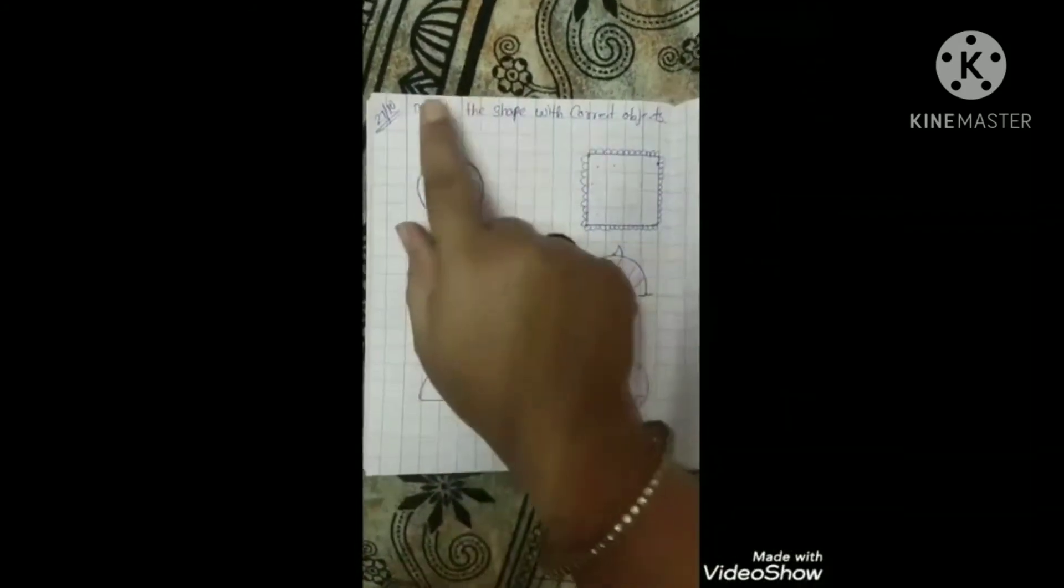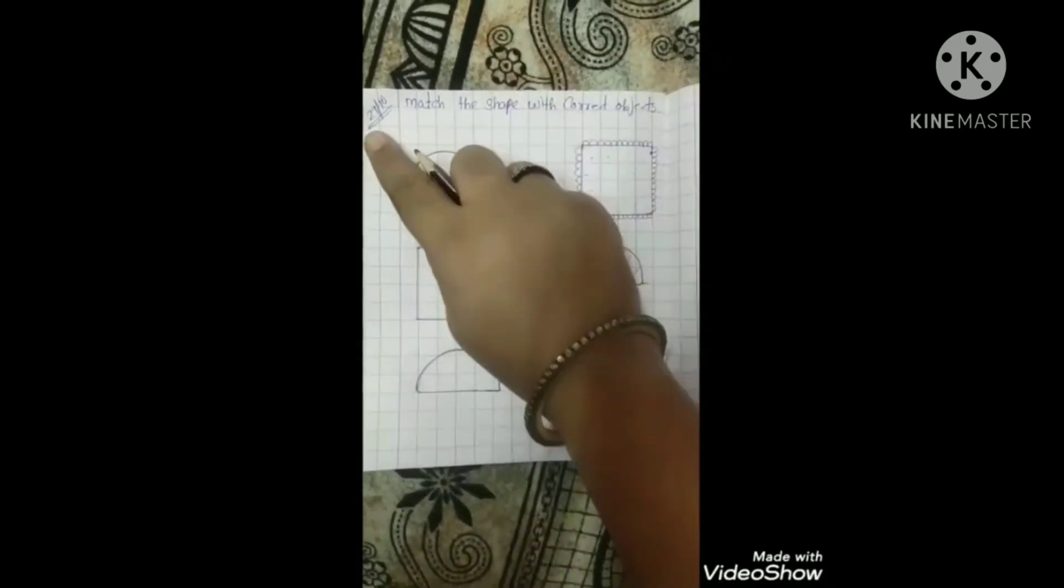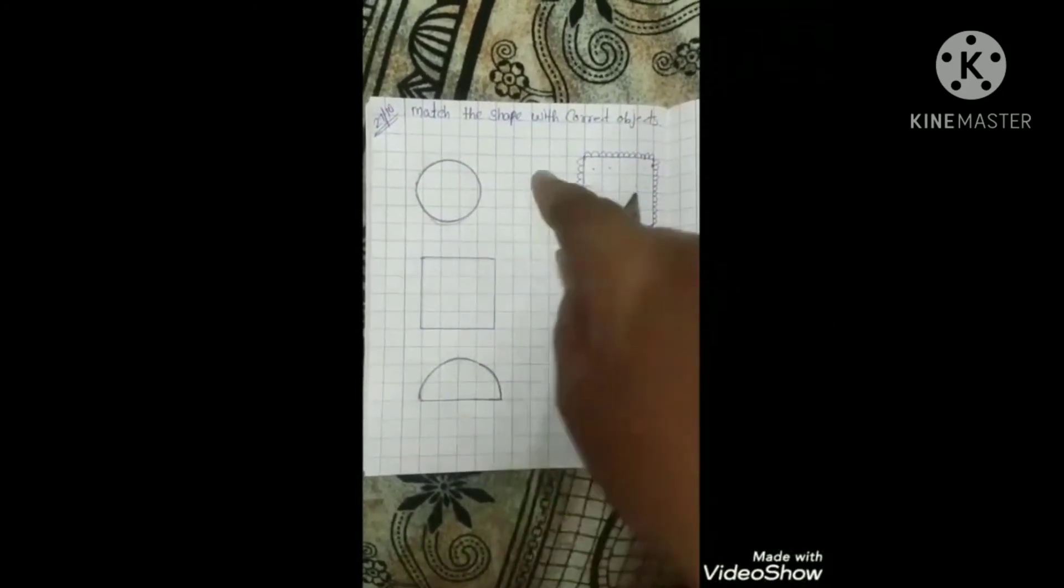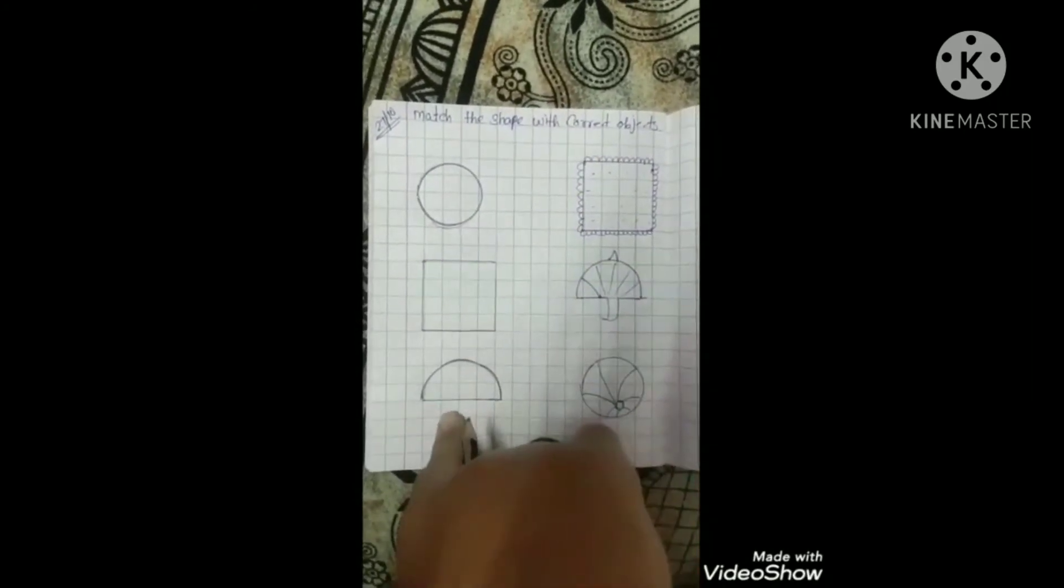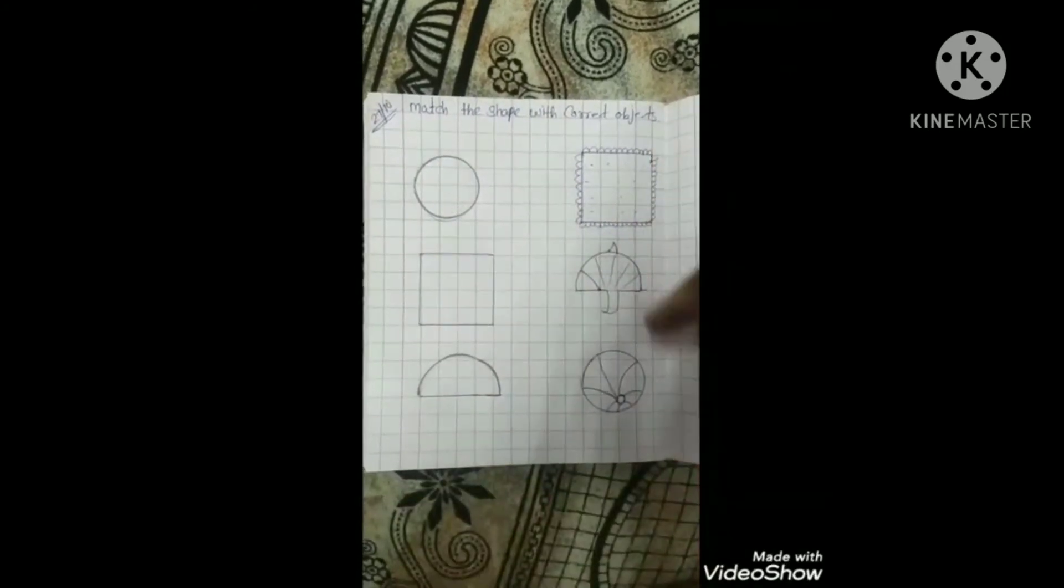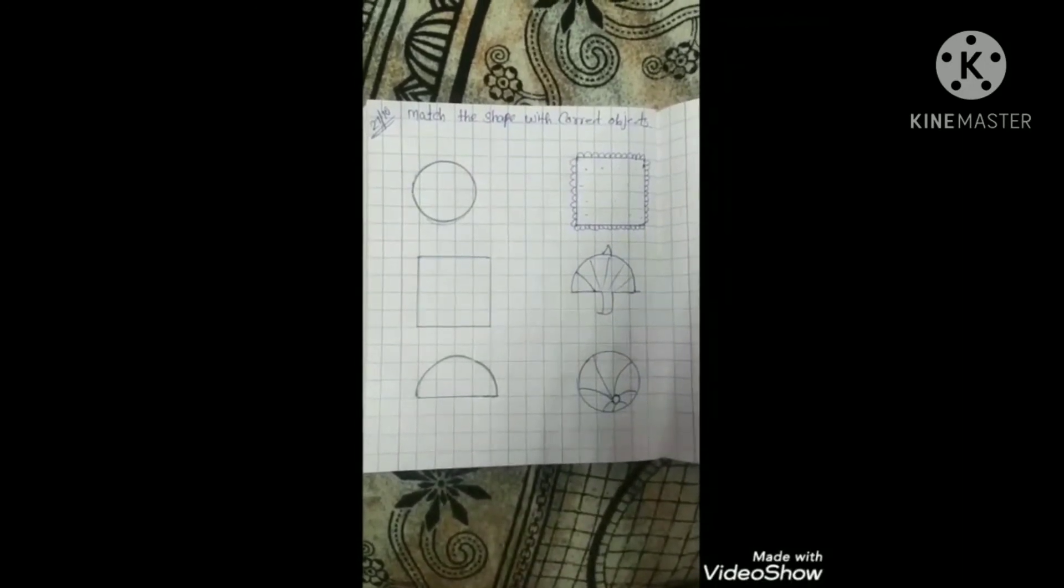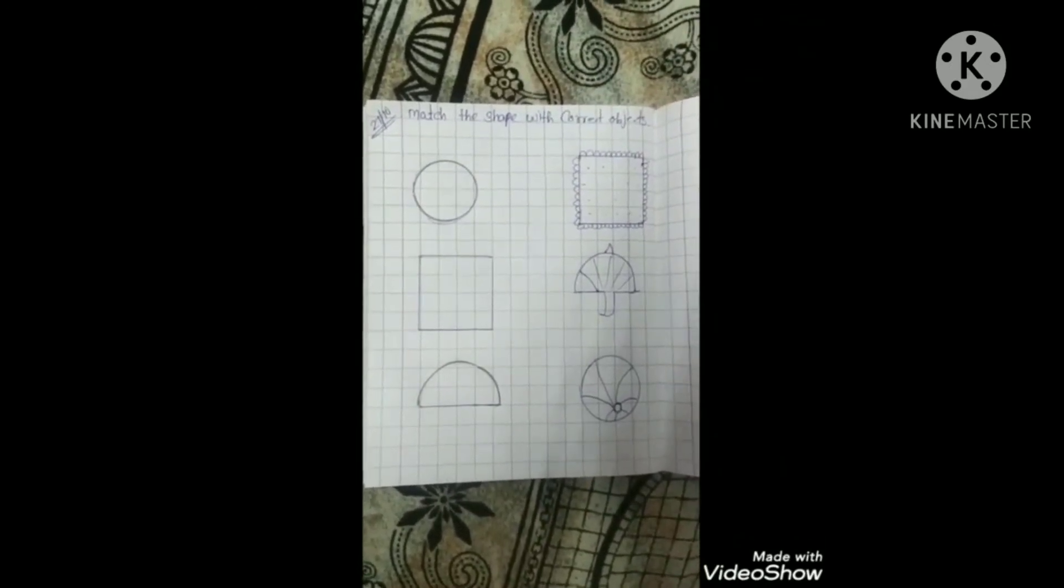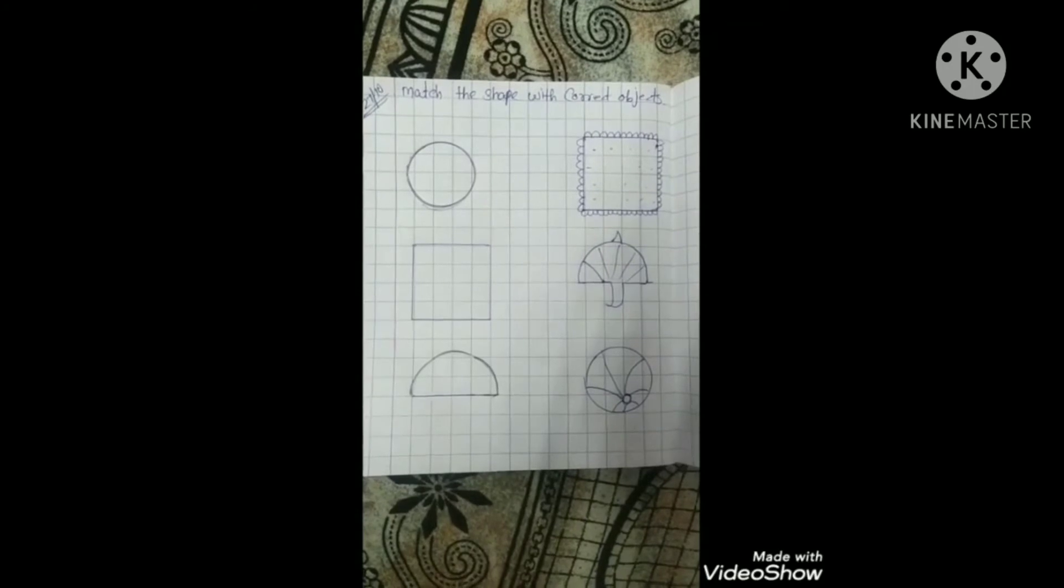Okay kids, now see. In this side we have three shapes, right? Circle, square, and semicircle. Another side we have three objects. So kids, you have to match the shape with the correct objects. You have to match the shape with the correct objects.